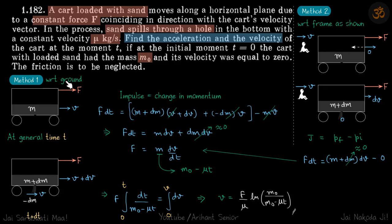We'll do it in two ways. First is our standard approach with respect to ground, which is a bit complicated, and second is with respect to a moving frame. So let's see both of them one by one. With respect to ground, at time t, let's say the cart's mass is m and it's traveling with velocity v, and a constant force F is acting.